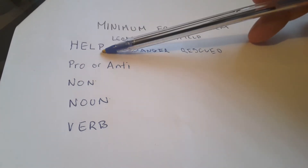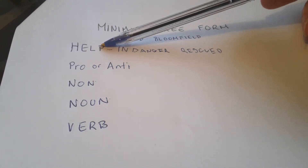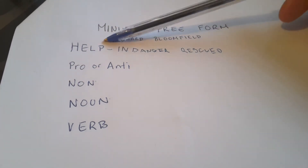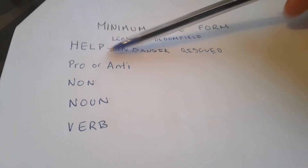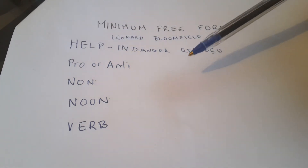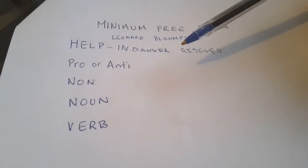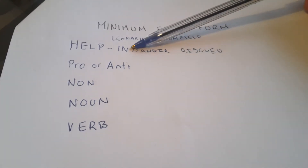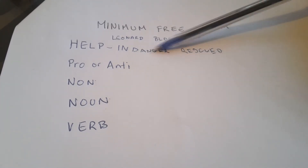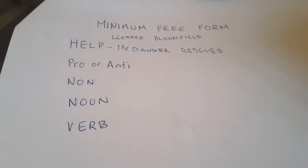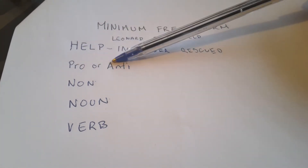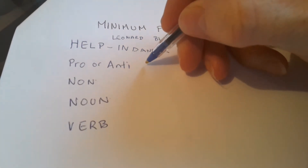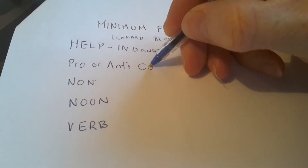It doesn't actually need anything else added to it. So it doesn't need to be expressed as 'help, I need to get out of the water' or 'help, I'm falling off a cliff' or 'help, I need to have some extra money to put on my transportation card.' That's one form. Another one is pro or anti.